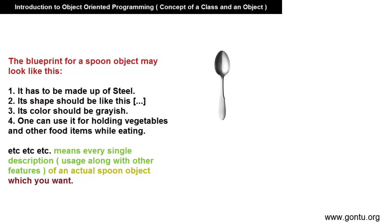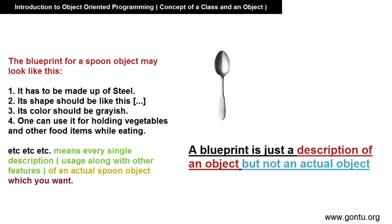And it's only then, by reading through this description, a factory guy would manufacture the actual spoon object. It's a one-time activity, writing the blueprint of what you want in an actual object. And later on, you may go on creating any number of physical objects of that type. Here the point to note is, the blueprint is just a complete description of an object, but not the actual object.